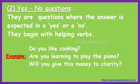The second type of interrogative sentences are yes-no questions. These are questions where the answer is expected to be yes or no. They begin with helping verbs. Examples: 'Do you like cooking?' 'Are you learning to play the piano?' 'Will you give this money to charity?' All these statements begin with helping verbs, not WH words, and the answer could be yes or no.